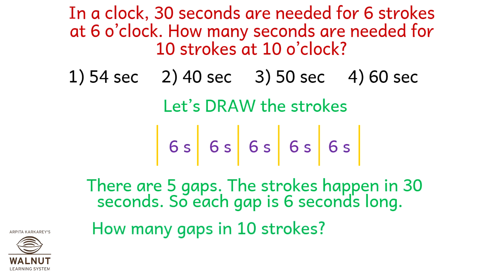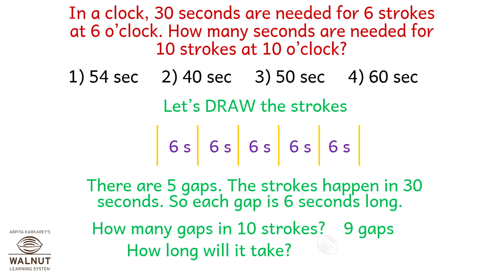How many gaps can happen in 10 strokes? 9 gaps. How long will it take? 9 into 6 seconds, which is 54 seconds. Option number 1.